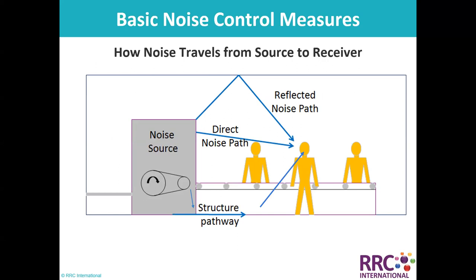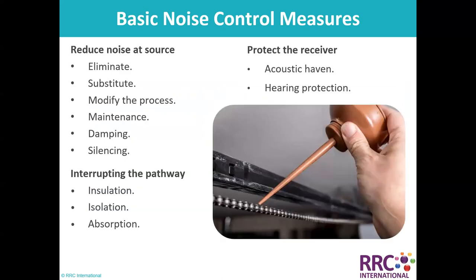Basic noise control measures follow the hierarchy of how noise travels from source to receiver. Reduce noise at source by eliminating, substituting, modifying the process, maintenance, damping, or silencing. Interrupt the pathway through insulation, isolation, or absorption. Protect the receiver through acoustic enclosures or hearing protection.